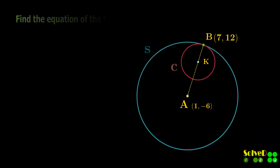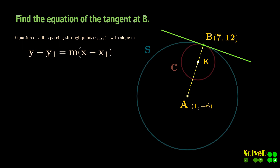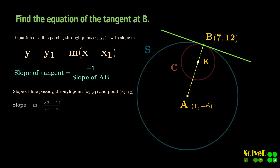Let's find the equation of the tangent line at point B. The general equation of a line passing through a given point is given by this equation, where M is the slope of the line. The point B is given, so we need to find the slope of the tangent. Since the tangent is perpendicular to line AB, therefore the slope of the tangent can be written as the negative reciprocal. The slope of a line passing through two given points is given by this equation. So the slope of the line AB is calculated as follows.